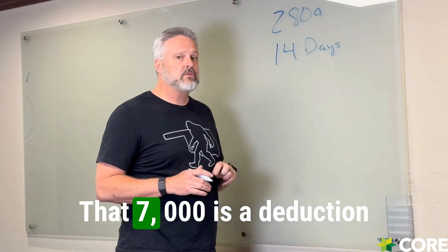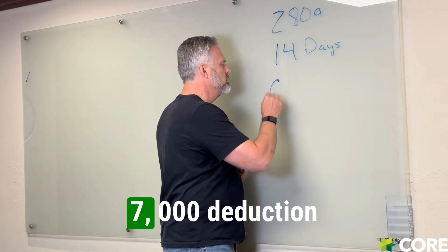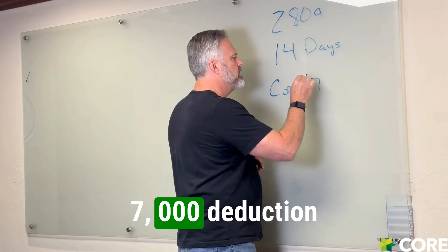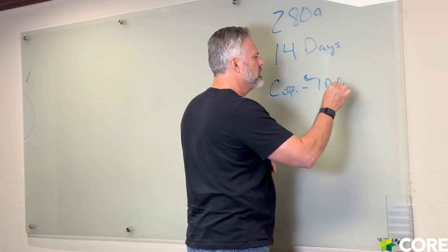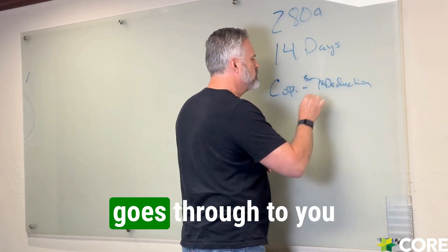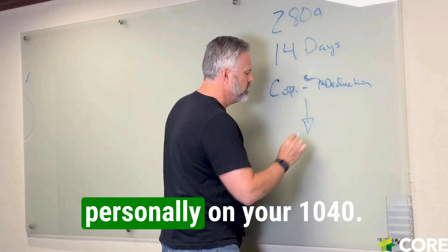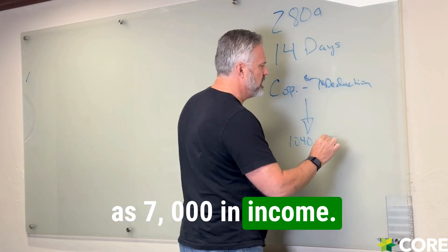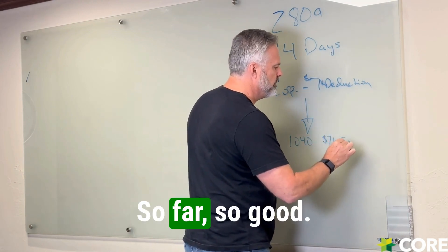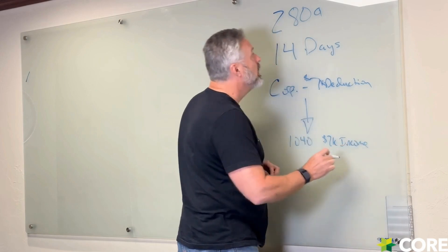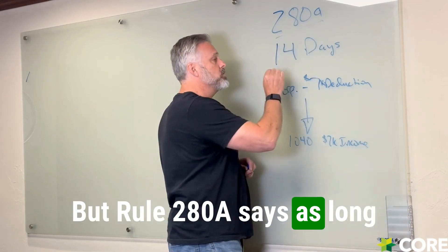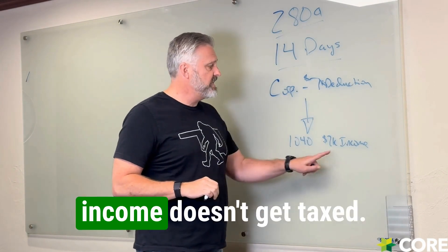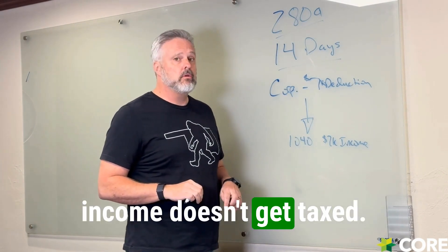That $7,000 is a deduction for the corporation. That $7,000 deduction flows through to you personally on your 1040 as $7,000 in income. But rule 280A says that as long as you don't rent it for more than 14 days, this income doesn't get taxed.